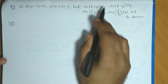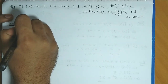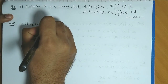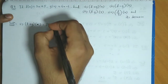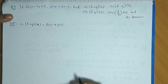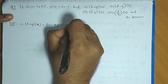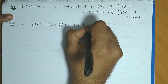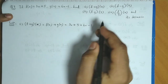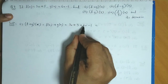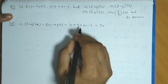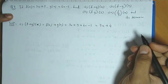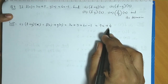First, we will find f plus g of x. So f plus g of x would be f(x) plus g(x). Now f(x) is 3x + 5 and g(x) is 6x - 1. If we add these terms, we get 3x + 6x = 9x, and 5 - 1 = 4. So the first answer is 9x + 4.